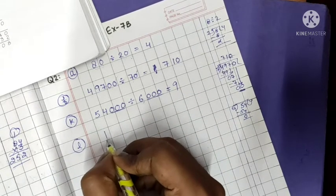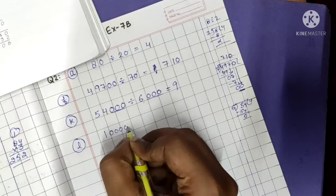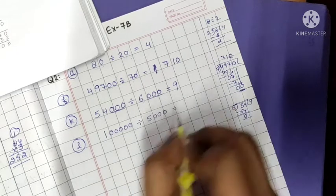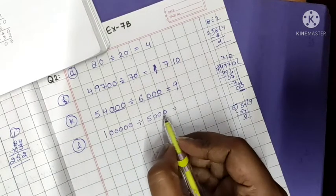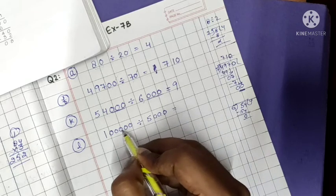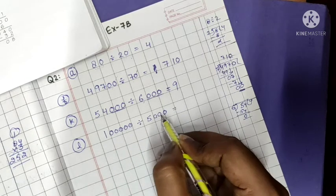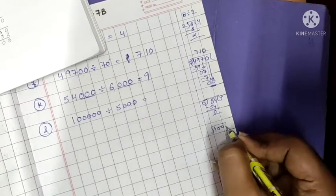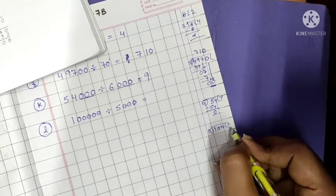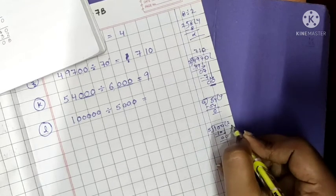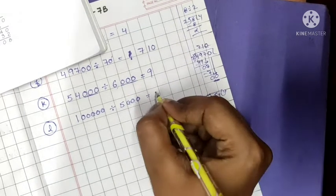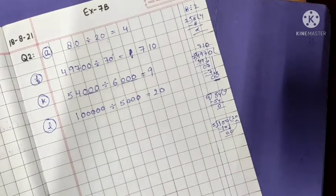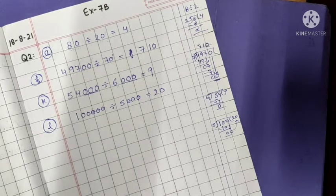Now come to another part, that is L part. 100,000 divided by 5,000. Count the number of zeros: 1, 2, 3 and 1, 2, 3. After removing these 3 zeros, what will the number become? Number will become 100 and it will become 5. So 5 twos are 10 and this 0 will move here. So the number will become 20. It is very easy. So I hope you got question number 2. Now you can do rest of the parts yourself.